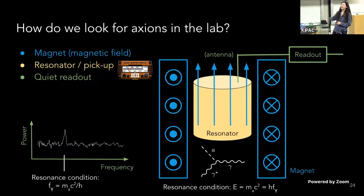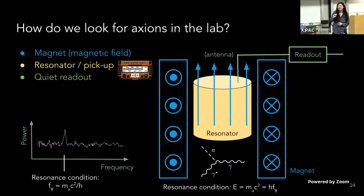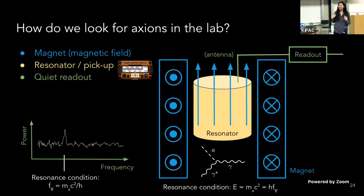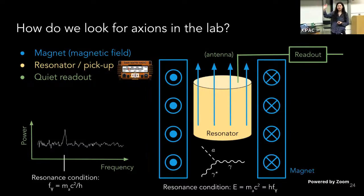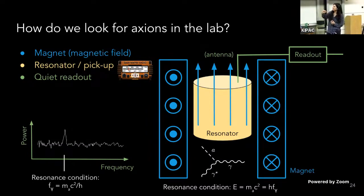Now that the axion has converted its energy into a photon inside the resonator, we can stick an antenna or some kind of pickup and then send it through a readout chain to read out the signal that we see. Really, we would be reading out noise or zero until we hit the frequency of the axion. So we need to be able to tune the frequency of the resonator to search for axions of different masses. On the bottom-left plot, the x-axis is frequency and the y-axis is power that we're measuring in some kind of resonant structure. We have to check one frequency at a time until we hit the resonance condition, and then we can see a signal above the noise.